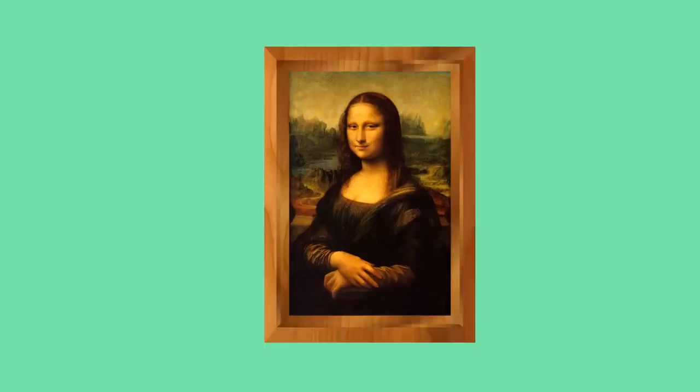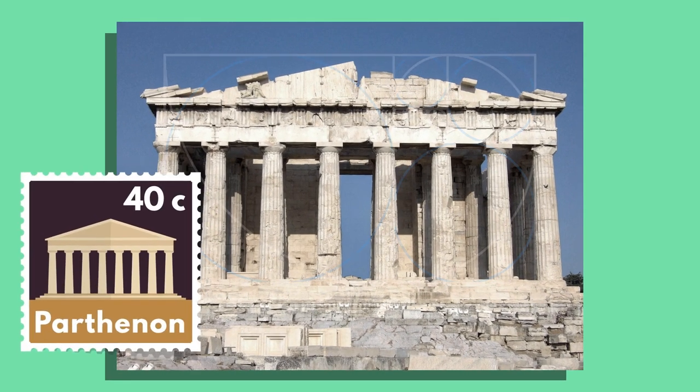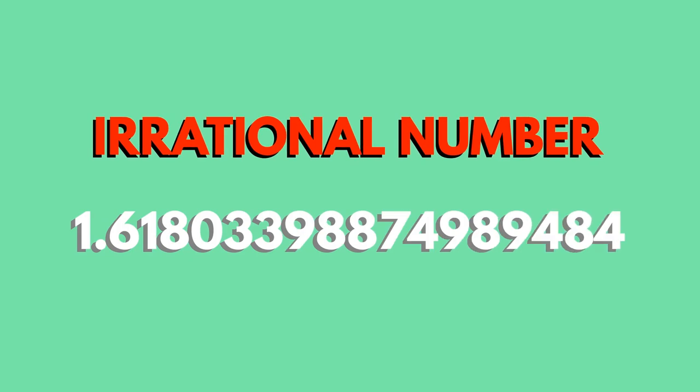Many everyday objects have the golden ratio as their dimensions. Some building designs and artworks make use of the golden ratio too, such as the Parthenon in Greece. It equates to an irrational number. What can you find about the golden ratio?